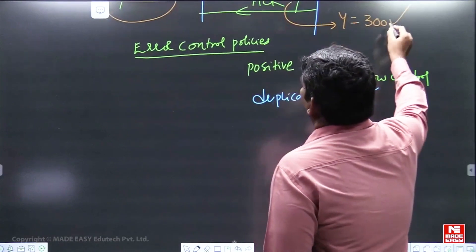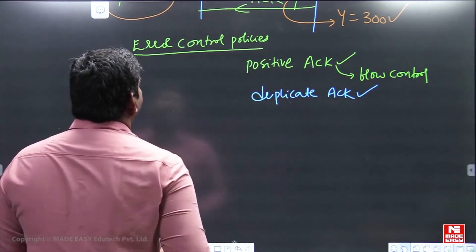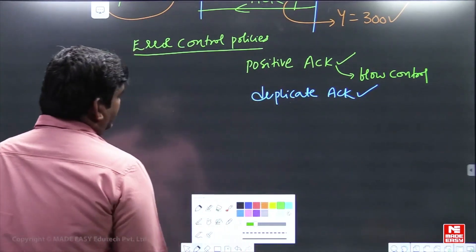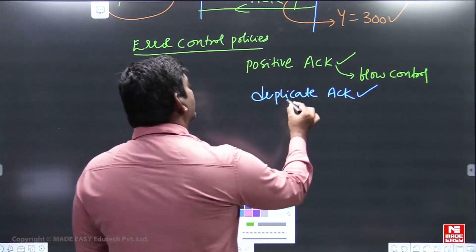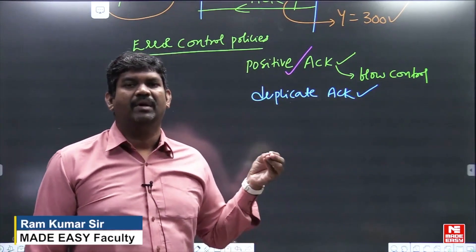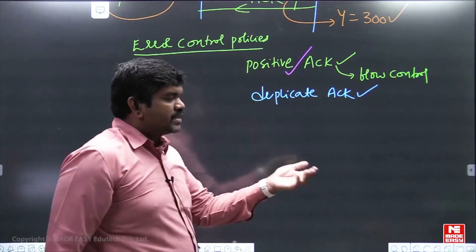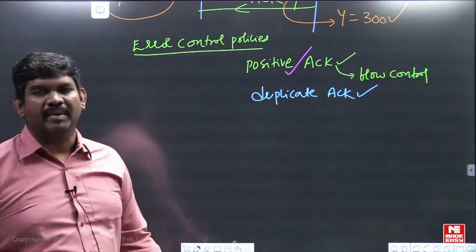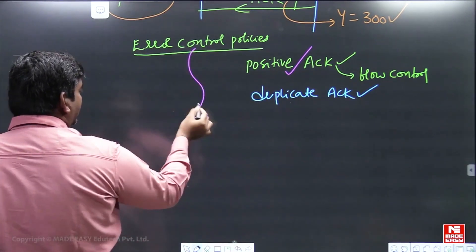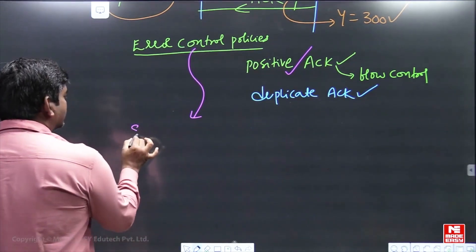We are talking about error control policies, which are applied in the data link layer as well as in the TCP transport layer. Whatever segment you transmit and receive acknowledgement for is called a positive acknowledgement. If you again send the same acknowledgement, that is called a duplicate acknowledgement. Now we talk about what error control policies are.